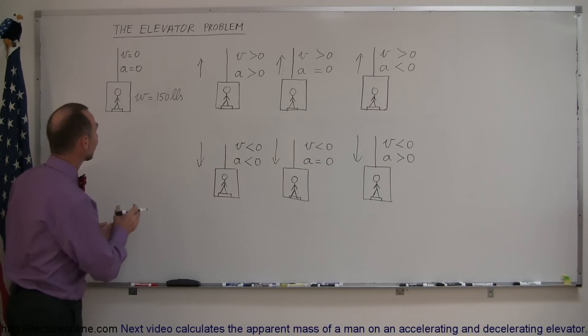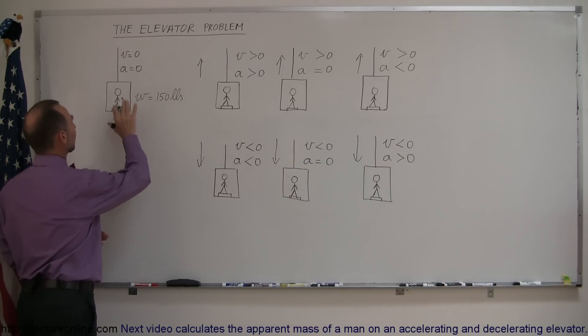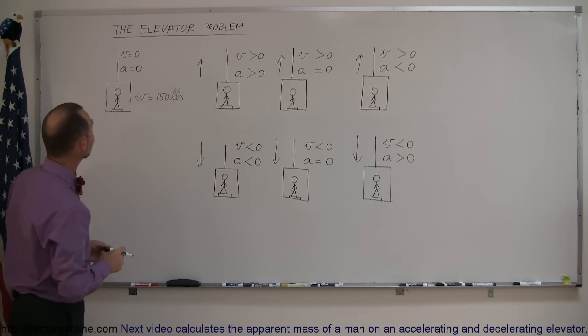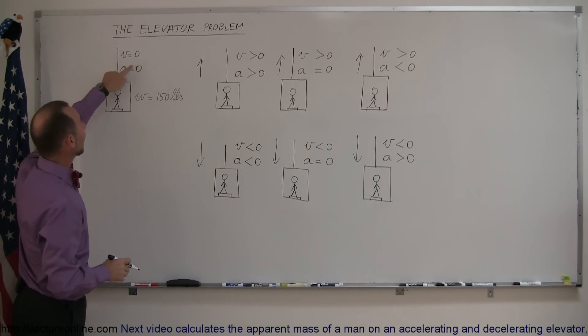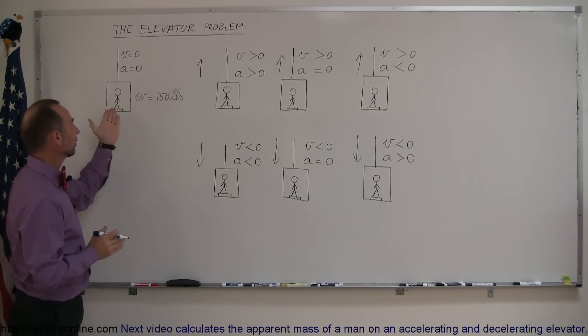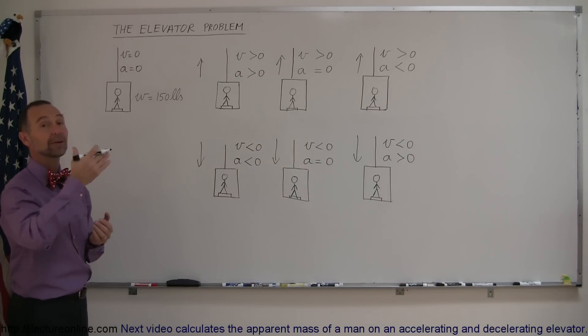So let's say, for example, there's a 150-pound person standing in an elevator on a bathroom scale so they can check their weight, and the elevator is not moving and not accelerating, so just perfectly standing still. The weight on the scale would show 150 pounds. What would the weight show on the scale if the elevator is moving upward, downward, accelerating upward, accelerating downward? Let's find out.